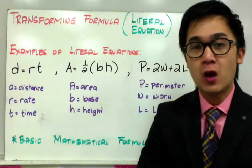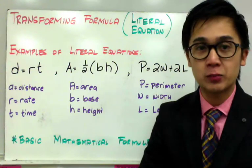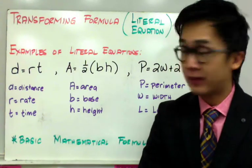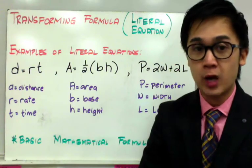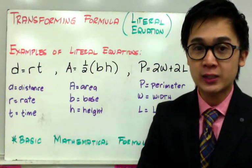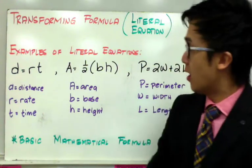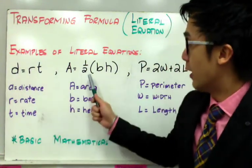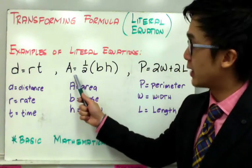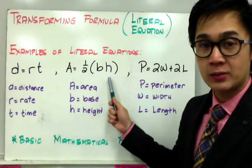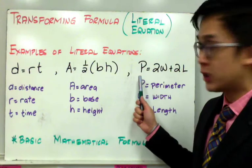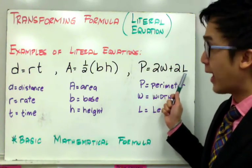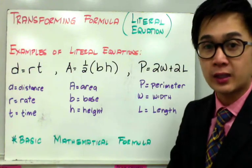Aside from our mathematical problem, we're going to be working on transforming formulas, or what we call literal equations in algebra. Examples of literal equations are the formula for distance given rate and time, which you usually see in physics problems, the formula for the area of a triangle given by A equals one half times B times H, and the formula for finding the perimeter of a quadrilateral, P equals twice the width plus twice the length. These are just examples of literal equations we will see in today's lesson.